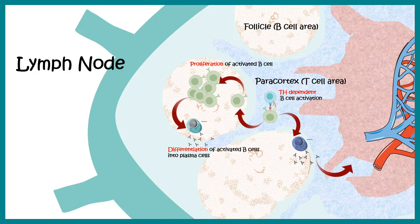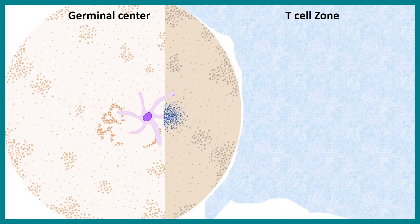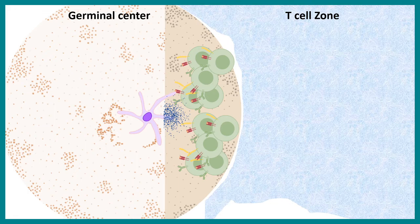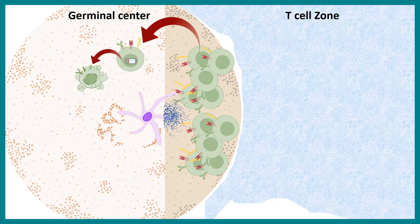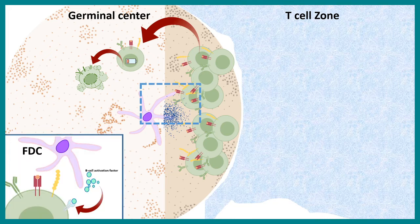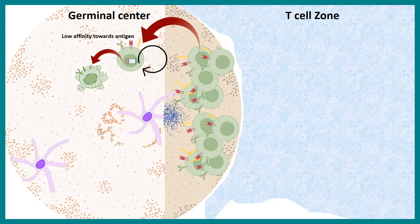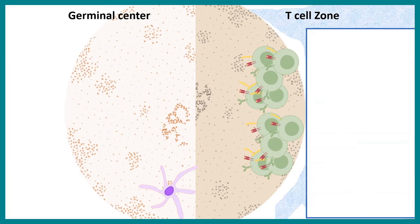Looking at the kinetics in the B cell follicle: activated B cells proliferate, and those with high-affinity receptors survive while those with low-affinity antibodies die by apoptosis. Follicular dendritic cells can help rescue B cells with low-affinity interactions by modifying those interactions. If the low-affinity problem is resolved, those B cells are differentiated into plasma cells; otherwise they undergo apoptosis.